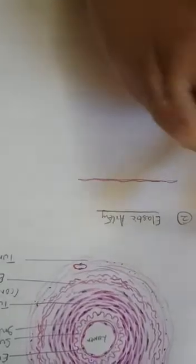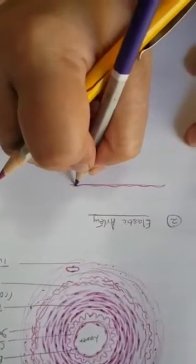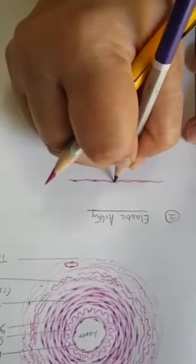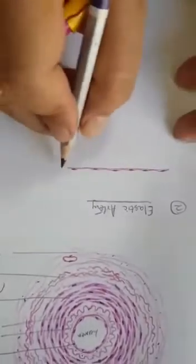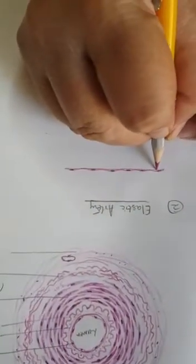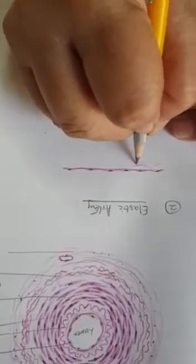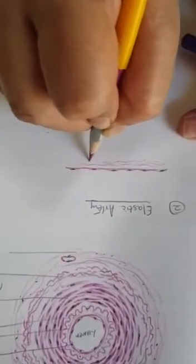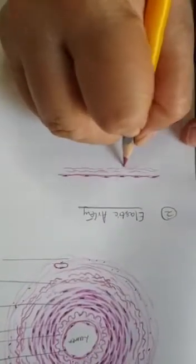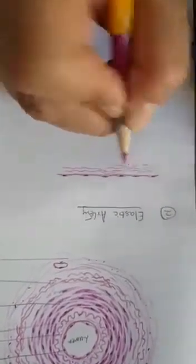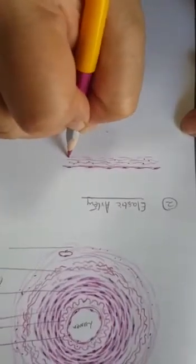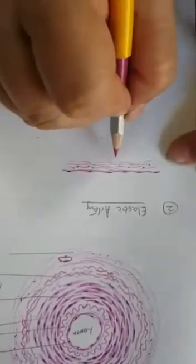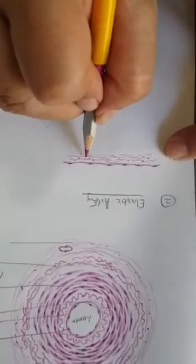You are not able to see complete lumen here, so lumen here is a big one, so you only see a part of it. Now you will see this is the endothelium. Just beneath endothelium you will draw subendothelial layer with thicker one here and the connective tissue fibers with cells here.